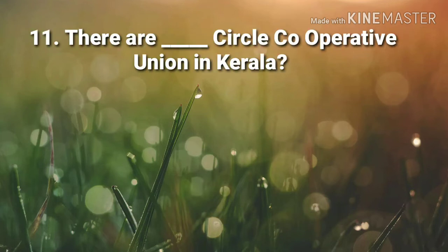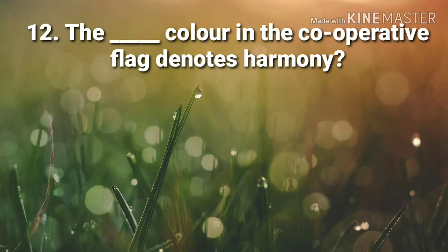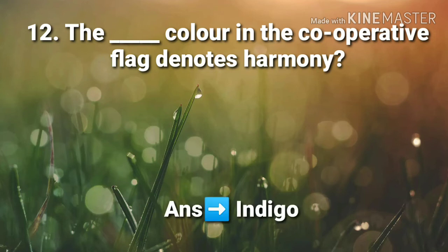11th question: There are how many circle cooperative unions in Kerala? Answer: 62. 12th question: The dash color in the cooperative flag denotes harmony — Answer: Indigo.